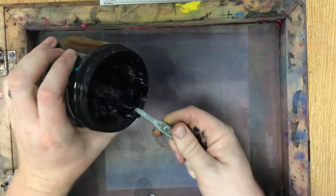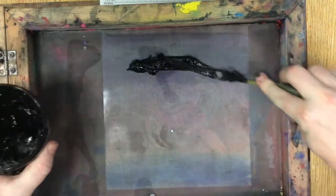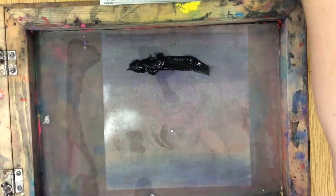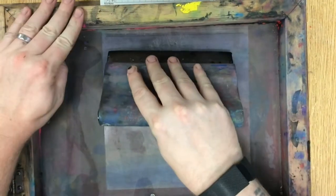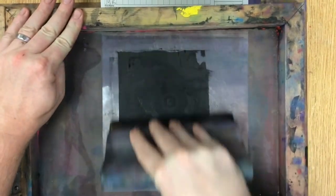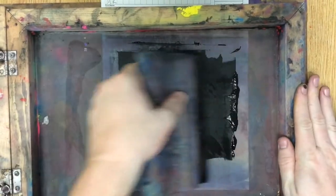Now I am going to scoop out some ink to put on to my screen. I use a squeegee to spread the ink. I do not need to cover the entire screen. I need to cover my whole stencil.